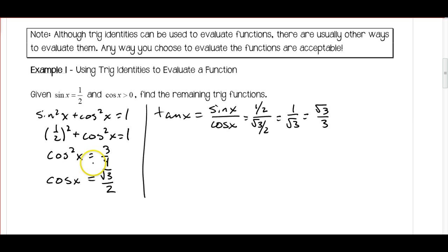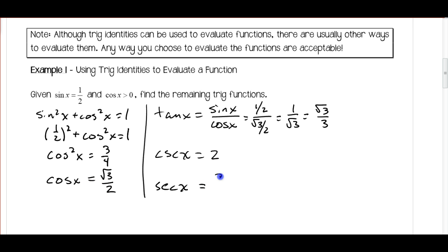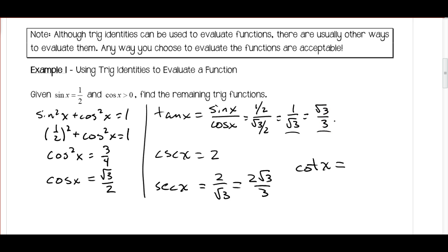Now that I have sine, cosine, and tangent, I can use my reciprocal identities to find the remaining functions. Cosecant of x is the reciprocal of sine, so that's 2. Secant of x is the reciprocal of cosine, which is two over root three — rationalizing gives two root three over three. Cotangent is the reciprocal of tangent; using the simpler form, it's just root three. That's how we use identities to solve the problem.